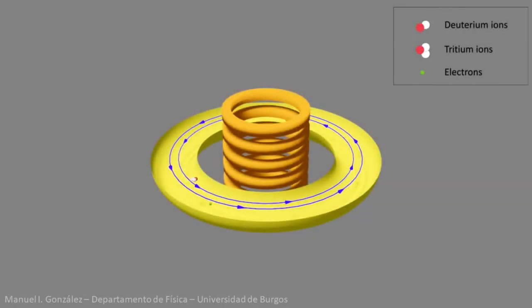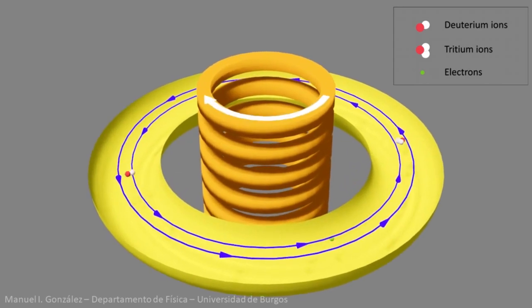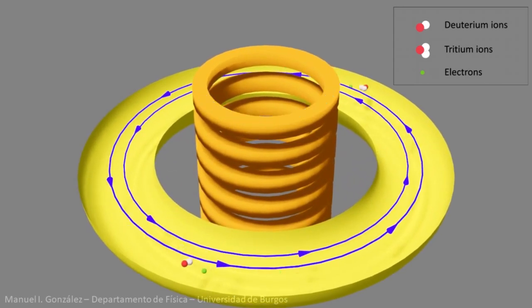The same principle governs the interaction between the plasma and the central solenoid. When an intense variable current flows through it, all the particles—deuterium ions, tritium ions, and electrons—are vigorously boosted. In one direction the ions, and the electrons in the opposite direction.